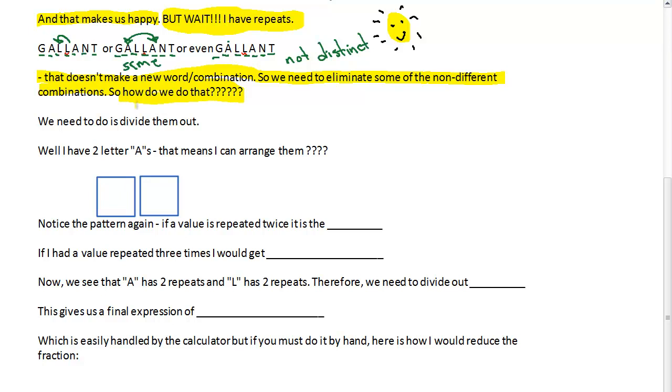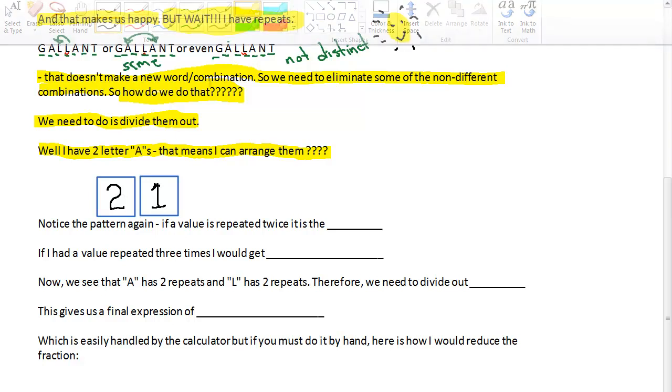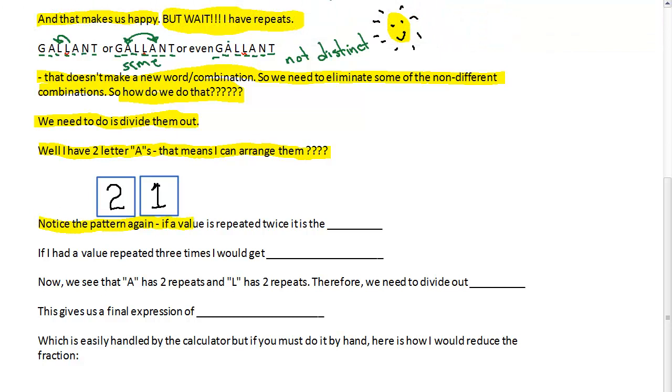So how do we do that? Well, basically, we need to divide them out of this problem. Now, I want you to think about this, as we're going to divide them out. I have two letter A's, and that means that I can arrange them how many different ways? Well, again, I have two A's, so I can pick one of the two A's to be in the first box. But as soon as I do that, I only have one A for the second position. And so, again, we have this pattern. Notice the pattern again. If a value is repeated twice, it is the, wait for it, two factorial.